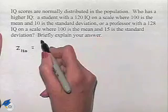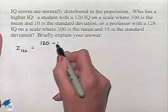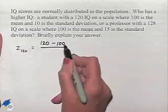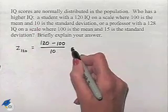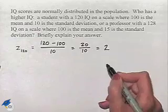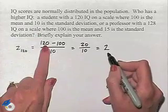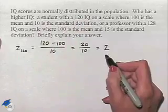...subtracting from it the mean of 100 and dividing by the standard deviation, which is going to be 10. So here we're going to come up with 20 divided by 10, which is equal to 2. This is telling us that 120 is two standard deviations above the mean in this population.